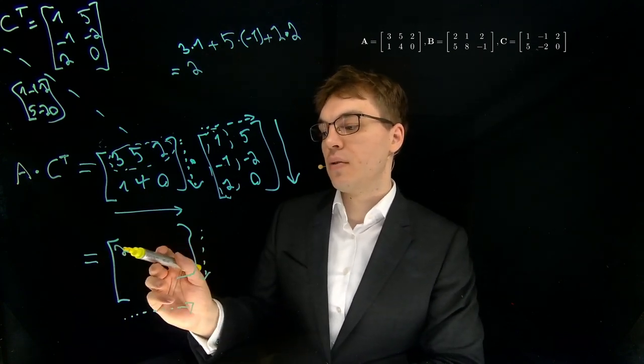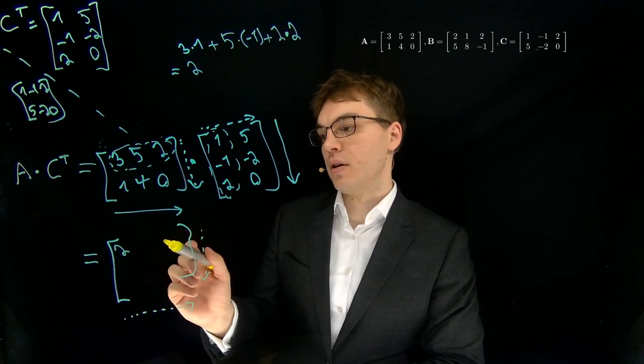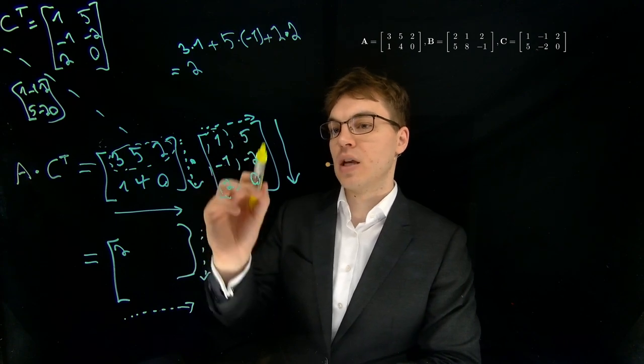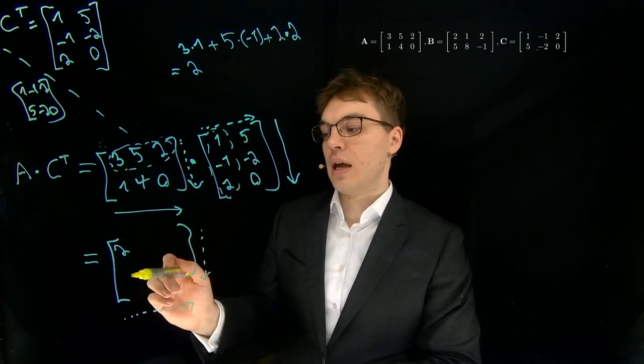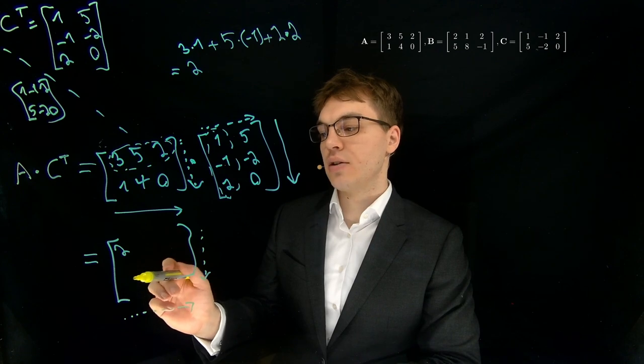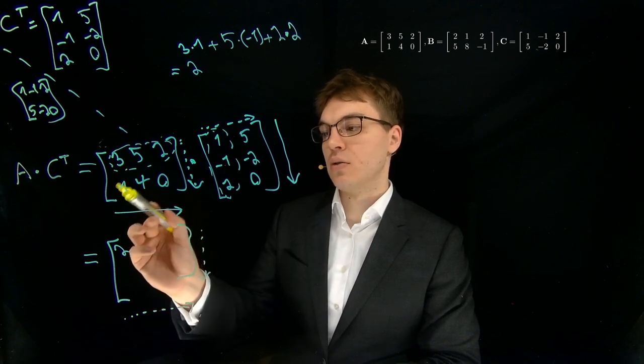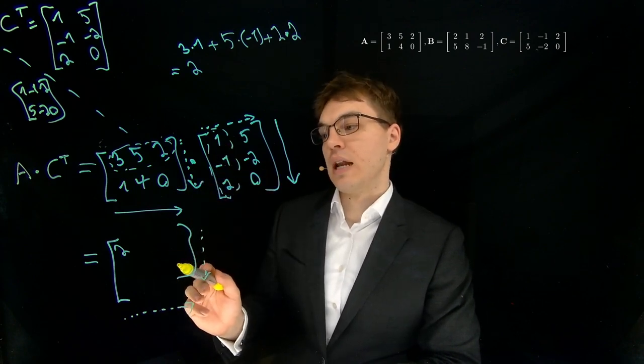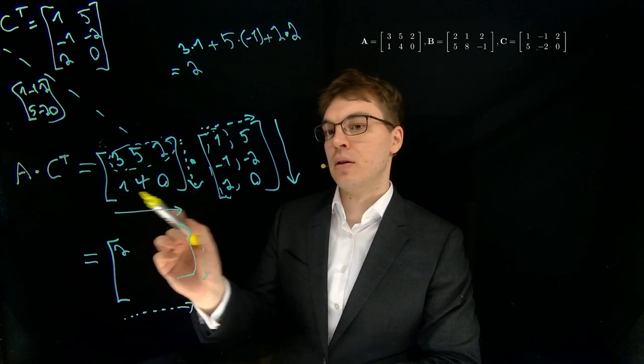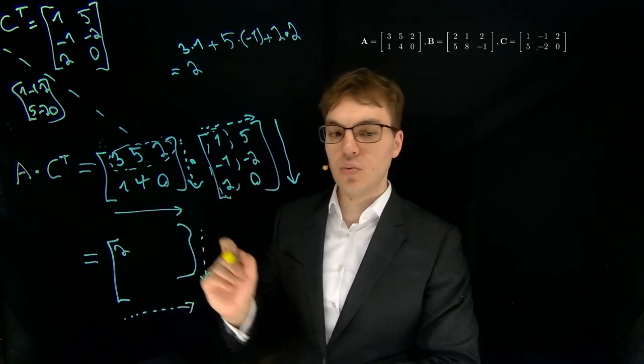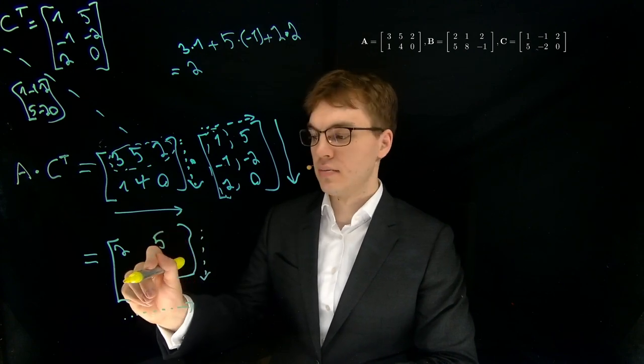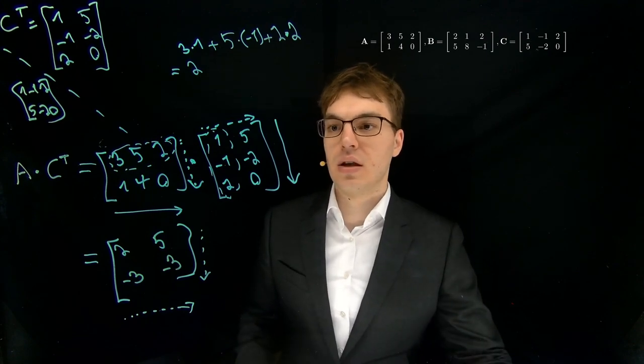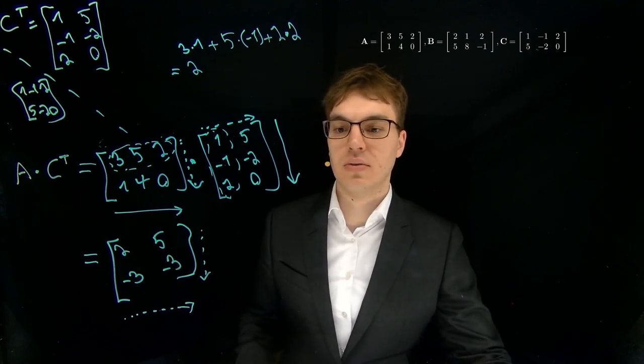And we now need to do this for all elements here. So for the second column, first row, which means we take the second column here and the first row here, and also for the second row, first column, second row, this is this one, and also the first column here, this one, and the last row and last column. So this one times this one. And once we did this, we will get this result over here. And this is how we can multiply matrices with the dot product.